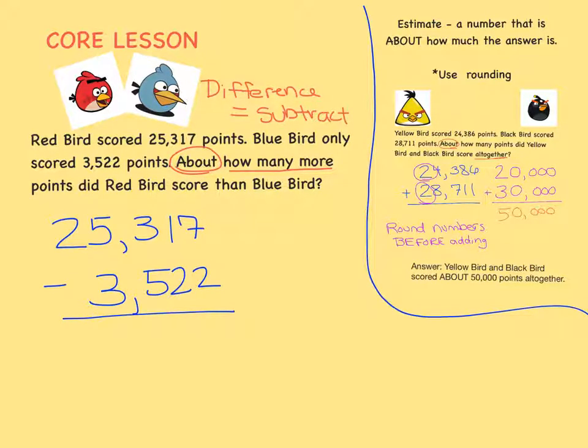The first thing we do when we estimate is we round the numbers. Now, we want to round them to the same place, and we want it to be the biggest place they have in common. So the biggest place I see here is in the 10,000th place. But, oh, if I look at this number, there's no digit in the 10,000th place, so I can't round them both to the 10,000th place. So instead, let's look over at the 1,000th place. They both have numbers in the 1,000th place, so that means we're going to round both these numbers to the 1,000th place.